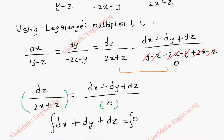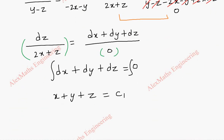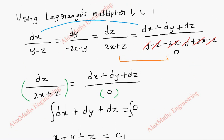Now we have to take another pair. Taking the first and last gives the same solution, so let's take the first and third pair instead, as it looks simpler.